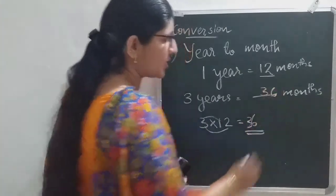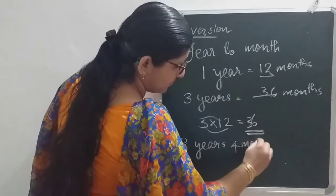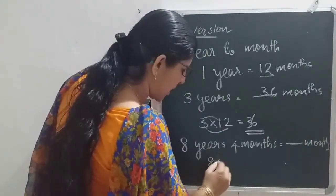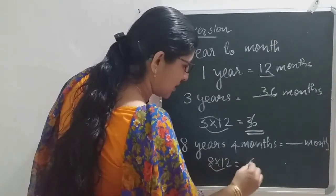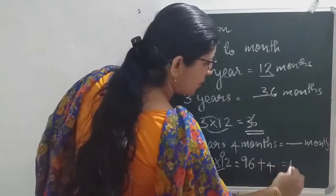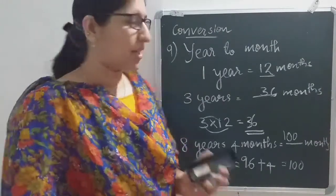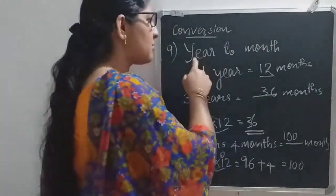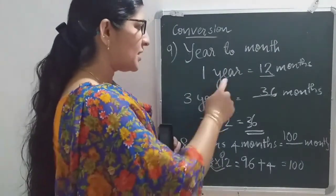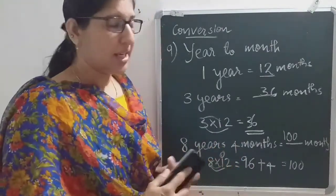The answer is 36 months. If it is 8 years 4 months, how many months? 8 years means 8 into 12, that is 96, plus this 4 months — 96 plus 4 is 100. So the answer is 100 months. Year to month: year is big, month is small, big to small you need to do multiplication. One year equals 12 months, so multiply by 12. Whenever years and months are given together, first convert years into months then add the remaining months.